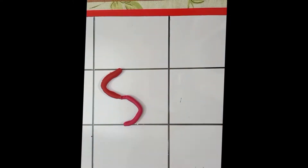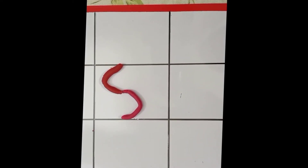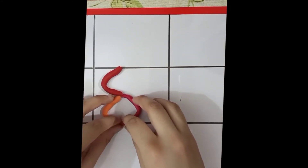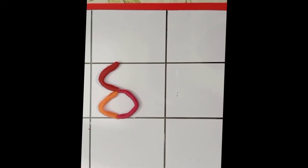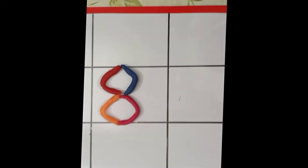Now we are going to write 8 with play-doh. Take one semicircle and put it on your left side, then a second one on the right side below. Take another semicircle and put it on your left side below. Then take another semicircle and put it on your right side above.